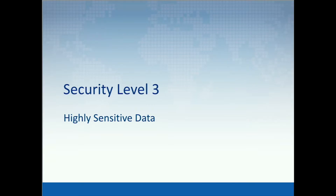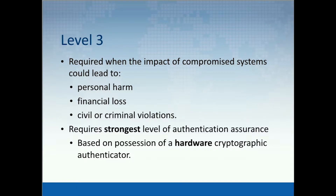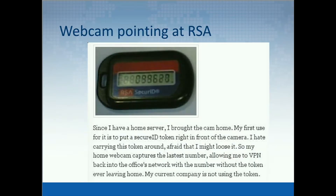Level three is for applications that contain highly sensitive, critical data — data that can lead to financial losses, personal harm, or civil or criminal violations. The authentication for those applications must provide a very high confidence that the claimant is bound to the subscriber's account. To do this, you need to be in possession of a cryptographic key — in other words, a hardware-based cryptographic authenticator. For example, you can have an RSA token, but it's important to understand that the token is still a secret. So you shouldn't have a publicly-facing webcam pointed at it, like this guy, who found it too difficult to carry around and was afraid of losing it.